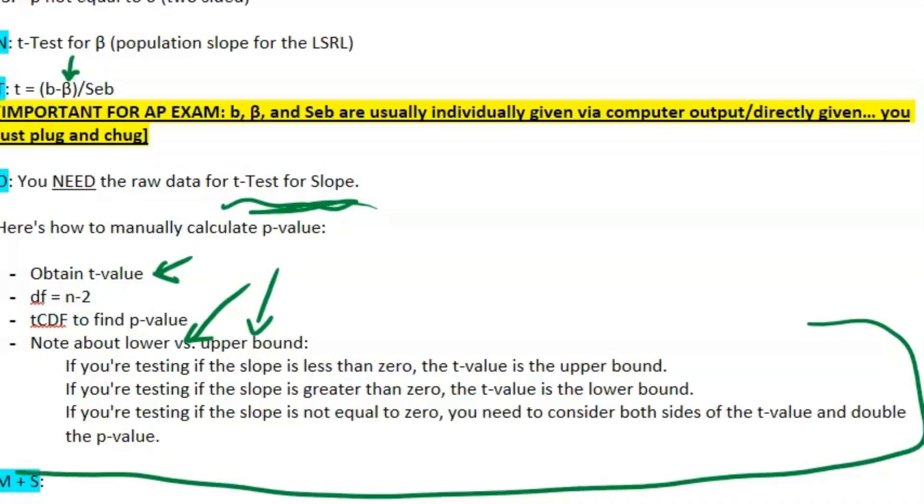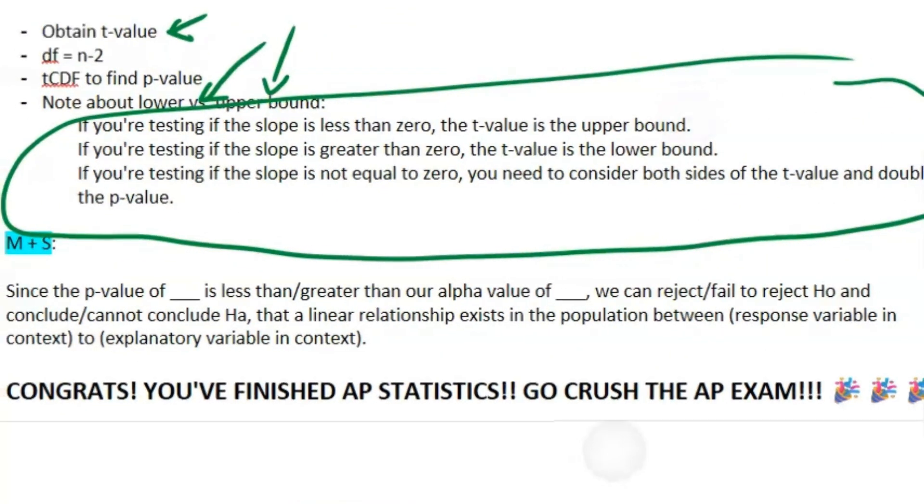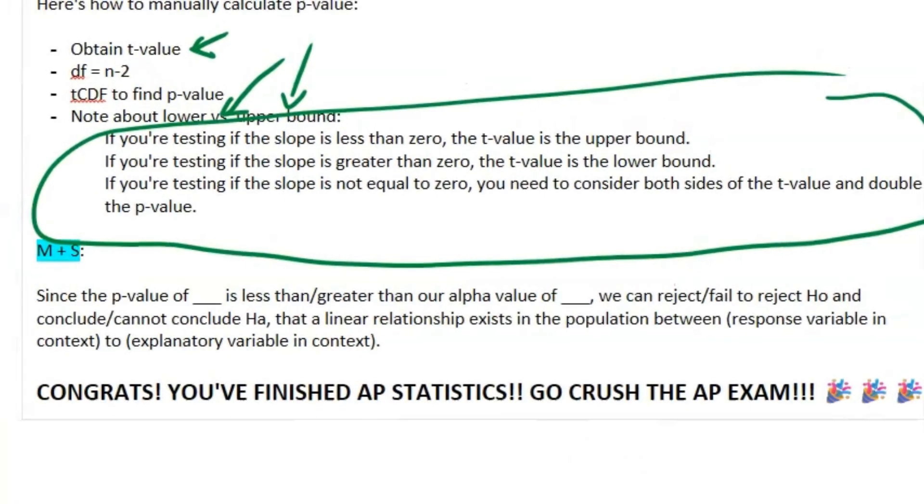For the conclusion: since the p-value of blank and blank is less than or greater than our alpha value of blank (usually that's given as well, or if it's not given, just assume it's 0.05), we can reject or fail to reject H₀ and conclude or cannot conclude Hₐ that a linear relationship exists in the population between your two variables. Guess what? In context. That's right, always say everything in context.